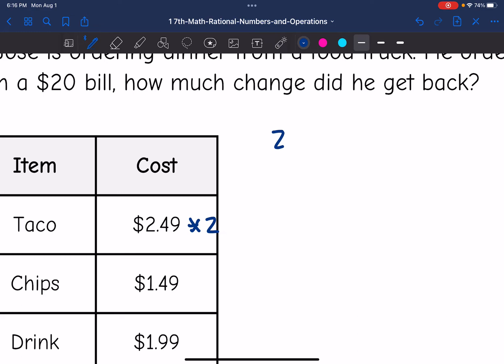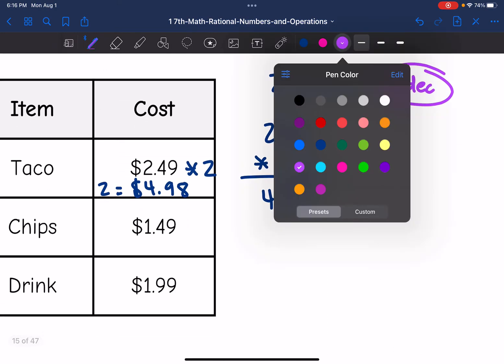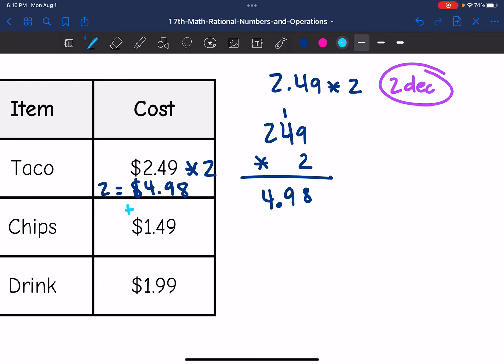I'm going to do 2.49 times 2. There's 2 decimal spaces there that I will add back at the end. 2 times 9 is 18, 2 times 4 is 8 plus 1 is 9, 2 times 2 is 4. So he's going to pay $4.98 for two tacos. Now I'm going to add the $4.98 and the $1.49 and the $1.99 to figure out how much he paid in total.